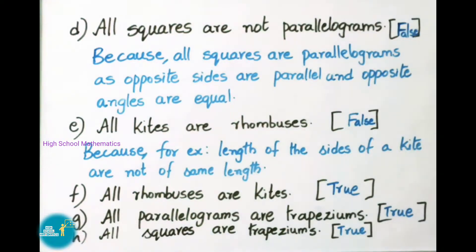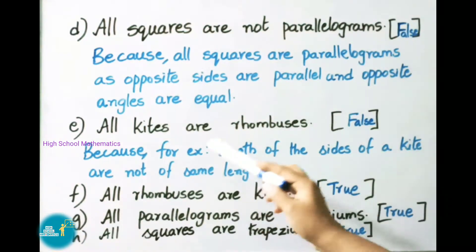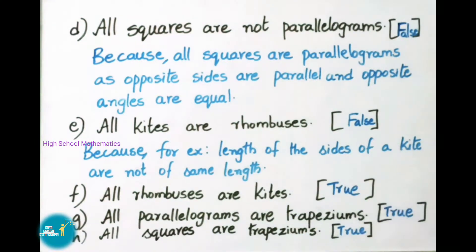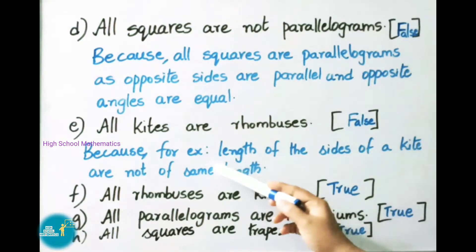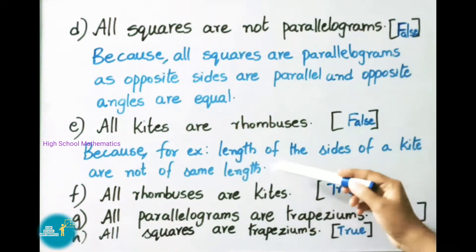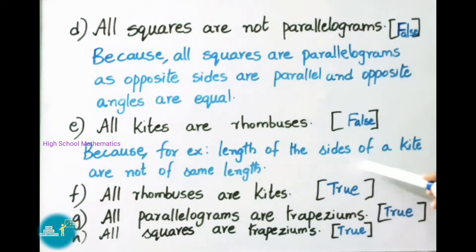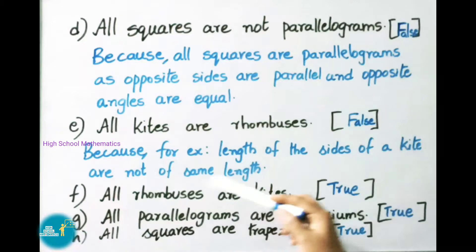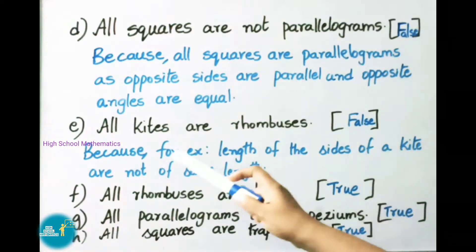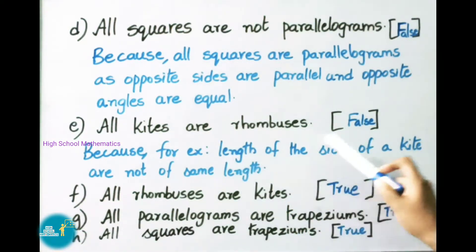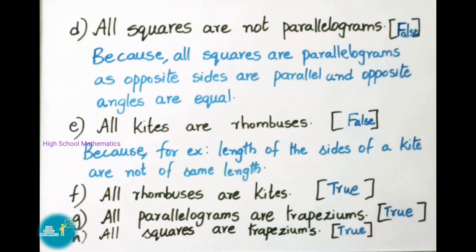Question E: All kites are rhombuses. The given statement is false. Why? Because the lengths of the sides of a kite are not all the same length. That's why it is a false statement.